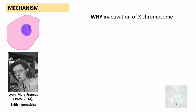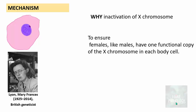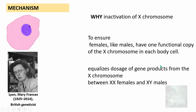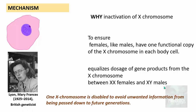Why is there inactivation of the X chromosome? Basically, this is to ensure that females, like males, have one functional copy of the X chromosome in each somatic cell — each body cell. This equalizes the dosage of gene products from the X chromosome between XX females and XY males. The X chromosome is inactivated or disabled to avoid unwanted information from being passed down to future generations.